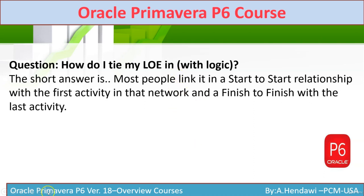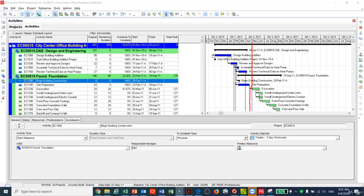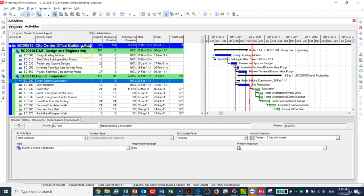How do you tie a Level of Effort activity? The LOE relationship is start-to-start with the predecessor and finish-to-finish with the successor. This gives you the correct span of the Level of Effort. Remember: start-to-start with the predecessor and finish-to-finish with the successor.